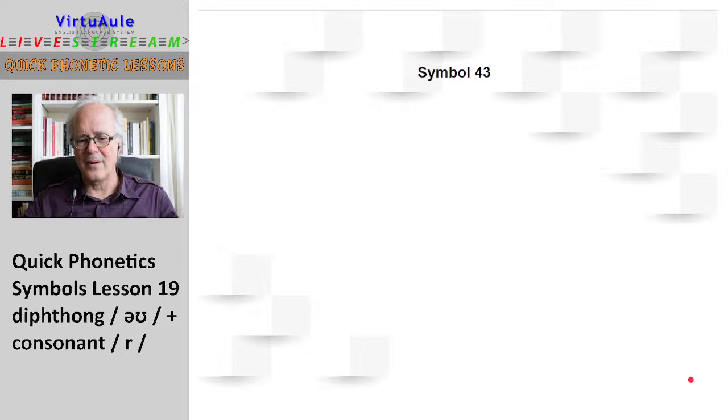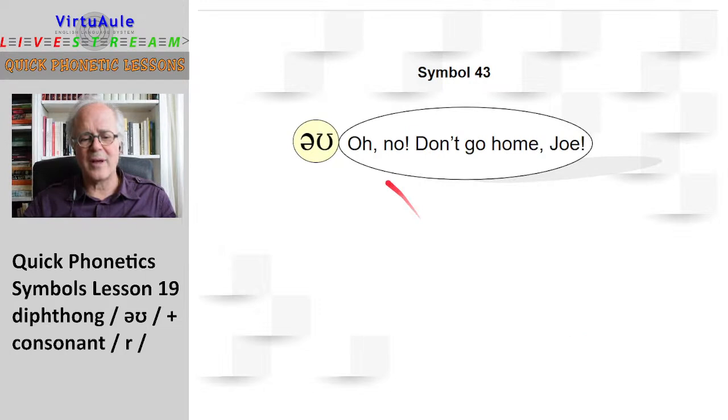Let's look at the vowel symbol. This is a short diphthong. We don't have underlined letters here. It's just a kind of a glide. And this entire sentence demonstrates the sound: Oh, no, don't go home, Joe.